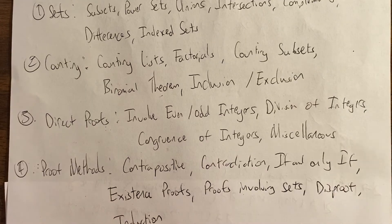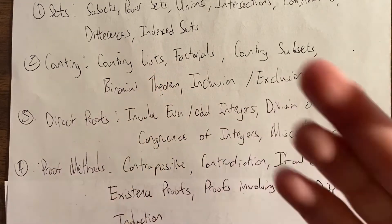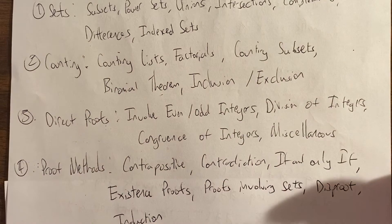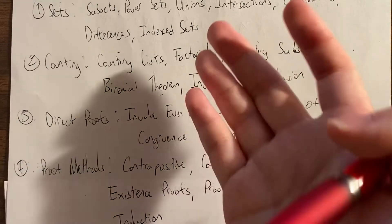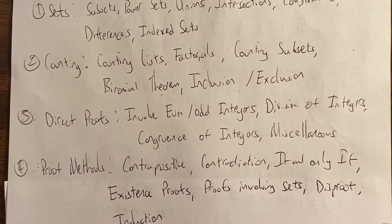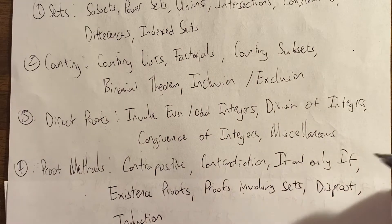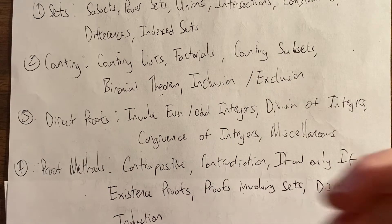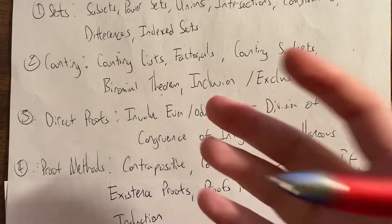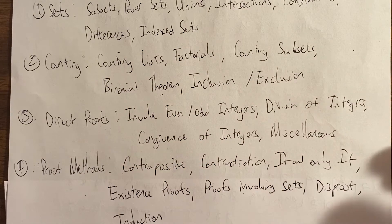Then we talk about counting, and counting is harder than it might sound. We count lists, we count subsets, whether order matters and whether order doesn't matter. We see the relationship between factorials and the binomial theorem and counting, and then we conclude by counting unions of things that involve inclusion and exclusion.